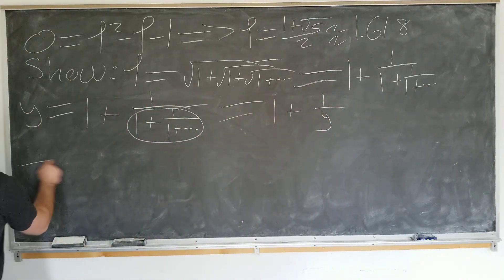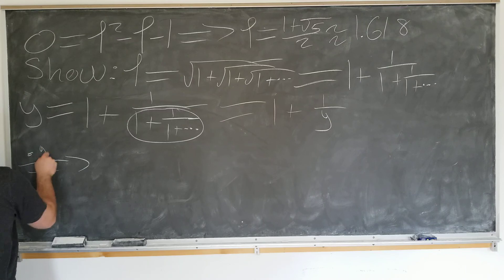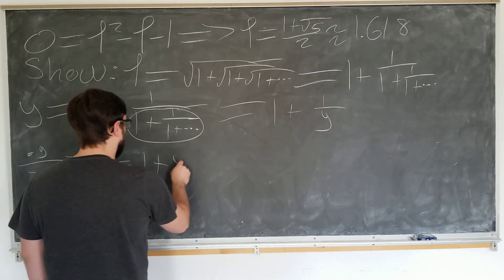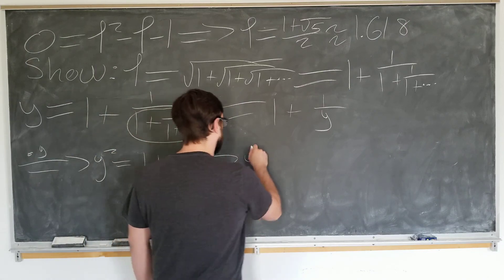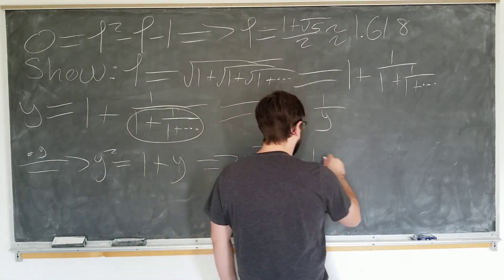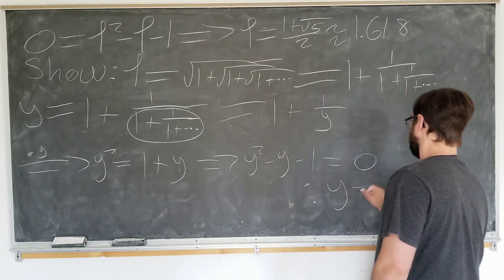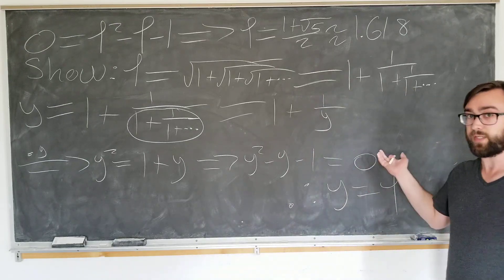And now, we're going to multiply both sides by y to obtain y squared equals 1 plus y. Again, y squared minus y minus 1 is equal to 0. Therefore, y is the golden ratio of 2. Pretty cool!